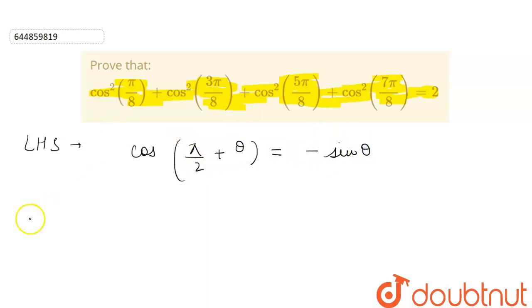Now here if we write this left hand side, we will get cos square pi by 8 plus cos square 3 pi by 8 can be written as it is.